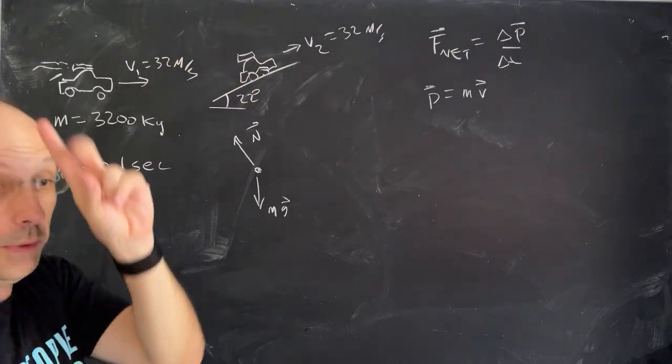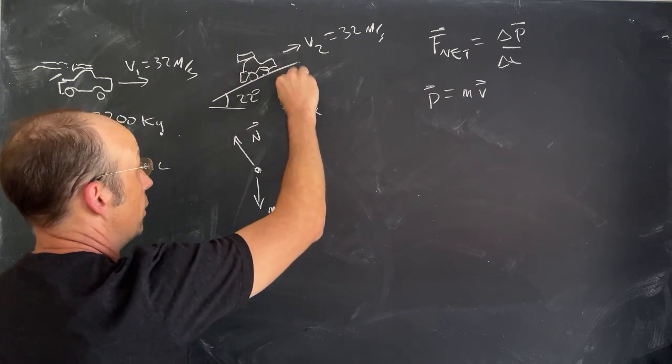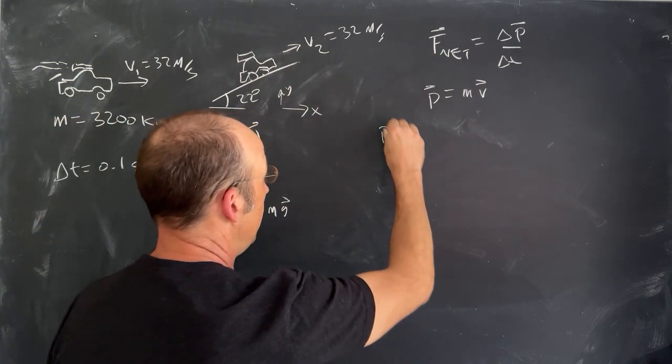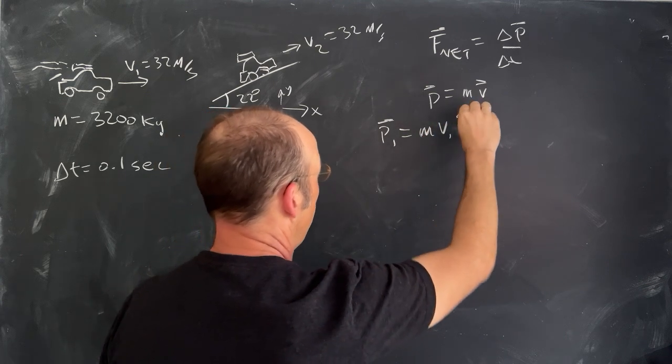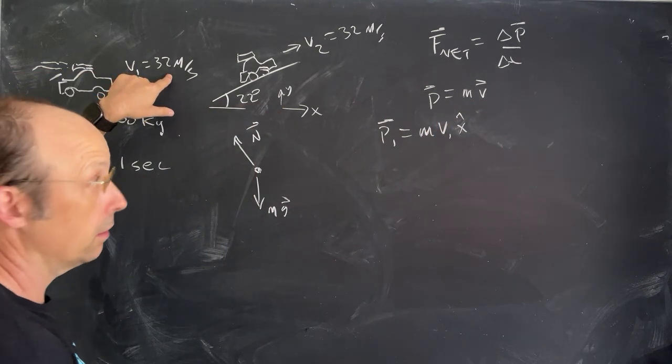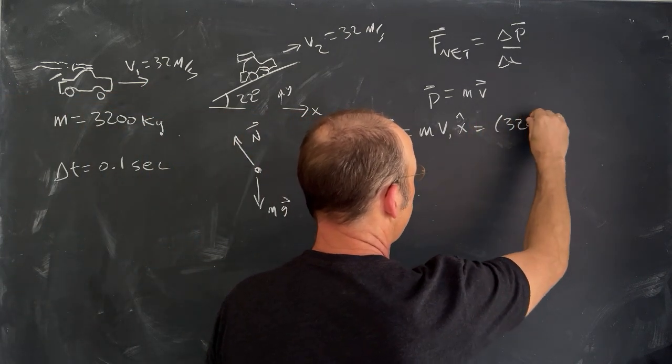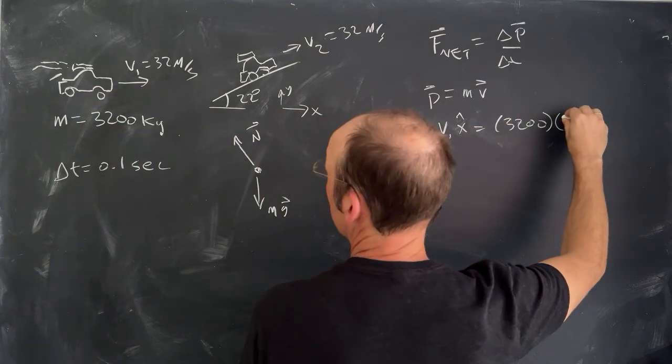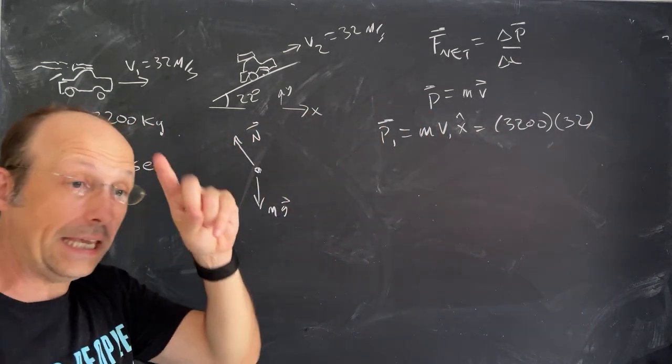The net force just depends on the change in momentum. So, let's find the change in momentum. To do that, we need P1, and we need P2. I'm going to call this the x direction, and that the y direction. So, P1's pretty easy. P1 is going to be the mass times V1 x-hat in the x direction. So, that's 32 meters per second. So, this is going to be equal to 3,200 times 32. And we'll calculate that in a little bit.